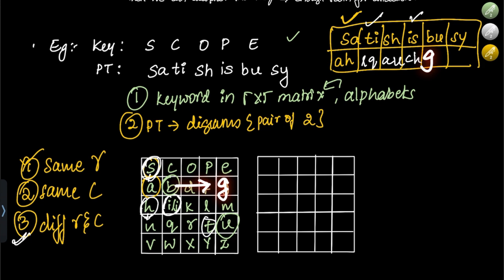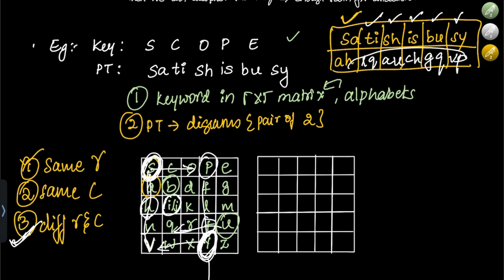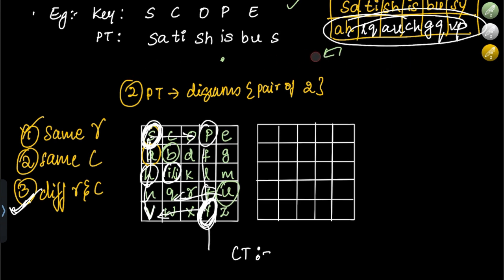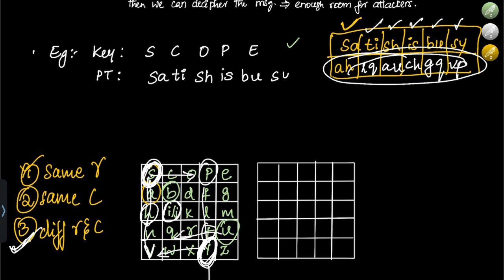For BU: B is here, U is here — different row and column. For B, the rectangle gives G, and for U it gives Q. So BU encrypts to GQ. For SY: S is here, Y is here — different row and different column. For S, take the letter in S's row at Y's column, which is V. For Y, take the letter in Y's row at S's column, which is P. So SY encrypts to VP.